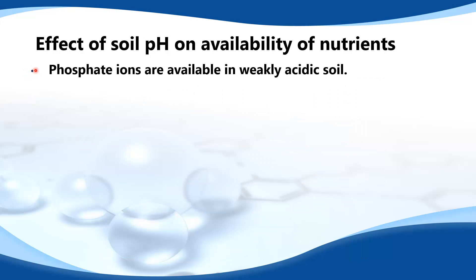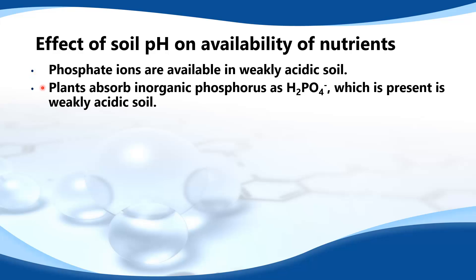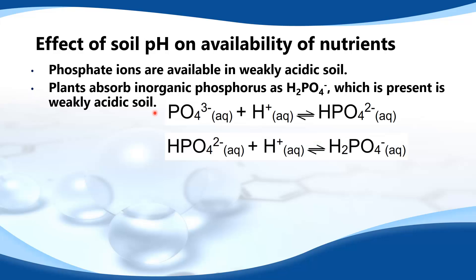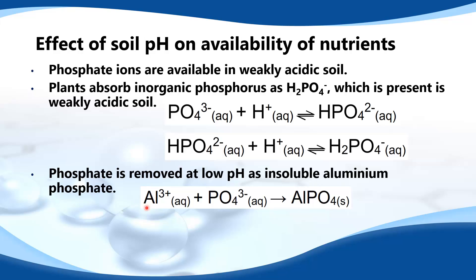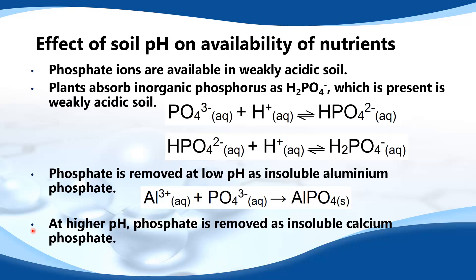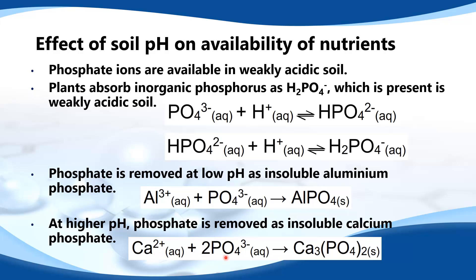Next we look at phosphate ions. Phosphate ions are available in weakly acidic soil. Plants absorb inorganic phosphorus as H₂PO₄⁻, which is present in weakly acidic soil. Phosphate is removed at low pH as insoluble aluminium phosphate: Al³⁺ + PO₄³⁻ forms insoluble aluminium phosphate. At higher pH, phosphate is removed as insoluble calcium phosphate, where Ca²⁺ reacts with the phosphate ion to form insoluble calcium phosphate.